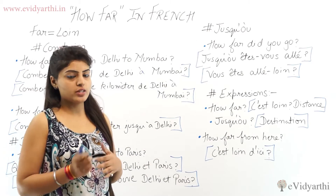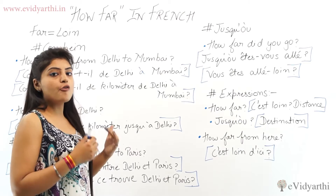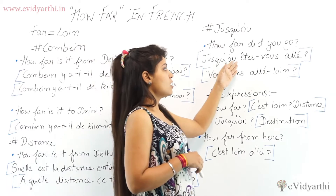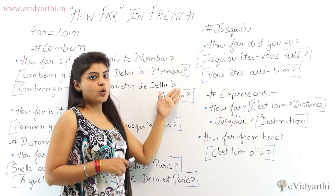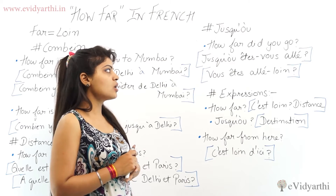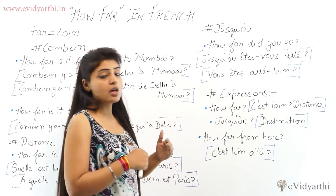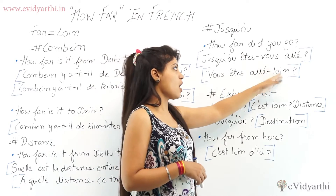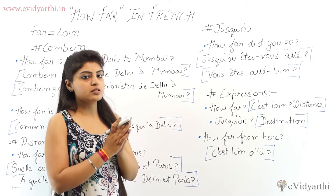Next is 'Jusque où?' For example: how far did you go? It will be: 'Jusque où êtes-vous allé?' Or you can say 'Vous êtes allé loin.' Both will be correct for 'how far did you go?' — 'Allé' means to go, so 'Vous êtes allé loin' or 'Jusque où êtes-vous allé?' Both are correct.